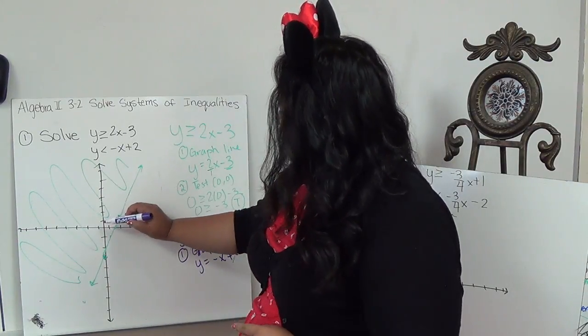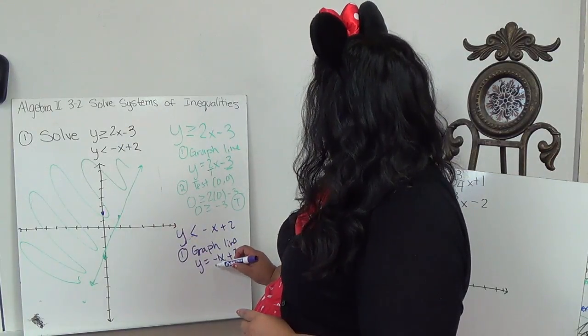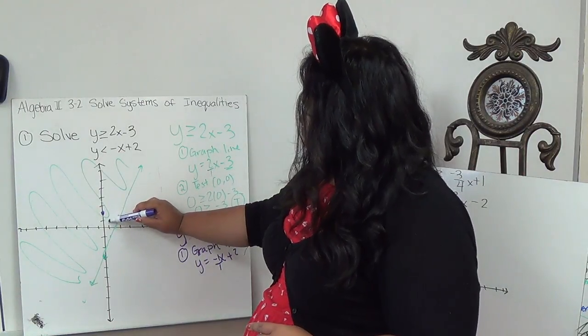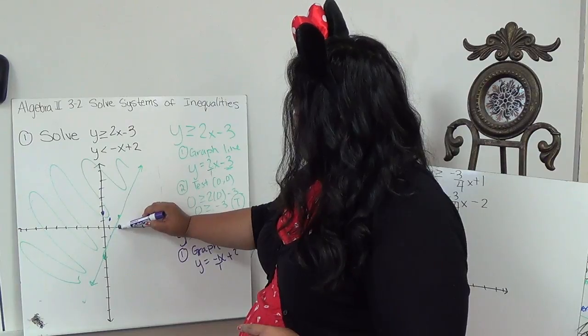So y equals negative x plus 2. I'm going to start at positive 2. And then I'm going to, it's negative 1 over 1. So I'm going to go down 1, positive 1. Down 1, positive 1.